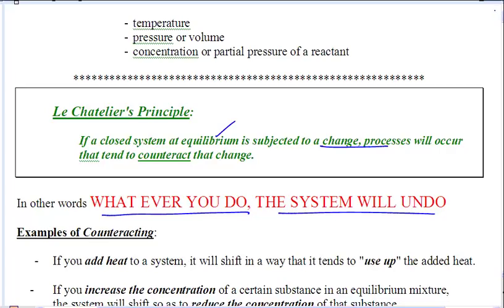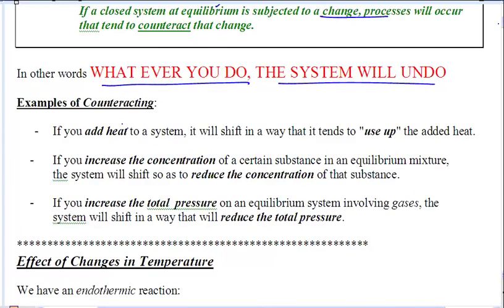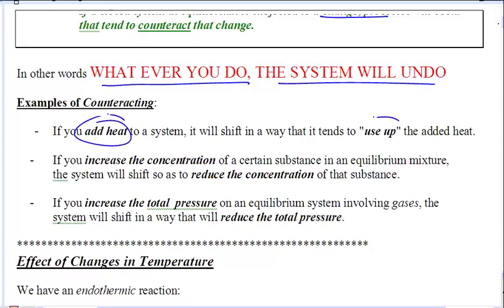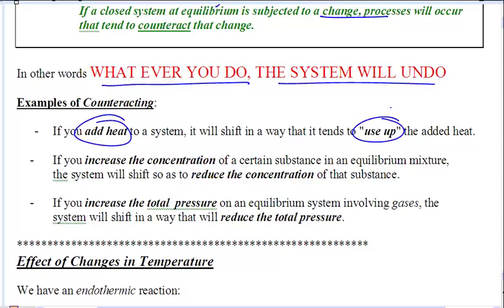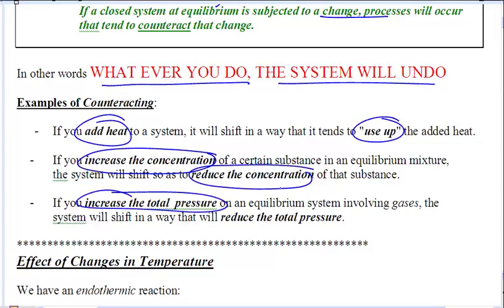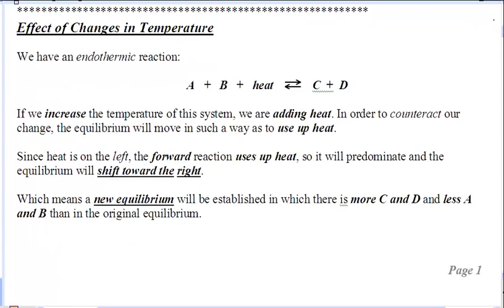We are going to have an equilibrium, and we are going to mess it up. We are going to change something, and that equilibrium will then undo my change. If we have an equilibrium and I add heat, it is going to want to use up that heat. If I cool it down, it's going to want to warm itself back up. If I increase the concentration of something, it is going to want to reduce that concentration. The equilibrium system will undo it by shifting to the reactant side or to the product side.